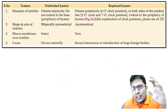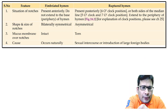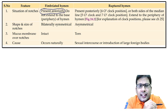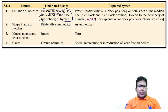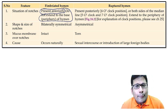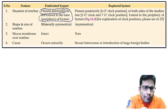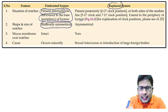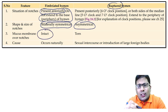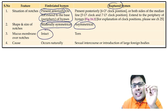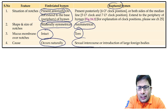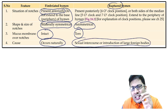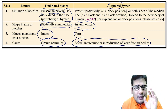Differences between fimbriated hymen and ruptured hymen: fimbriated hymen is present anteriorly and does not extend into the base of the hymen, whereas ruptured hymen extends to the base. Fimbriated hymen is bilaterally symmetrical; ruptured hymen is bilaterally asymmetrical. The mucous membrane over the notches is intact in fimbriated hymen but torn in ruptured hymen. The cause of fimbriated hymen is natural; ruptured hymen is due to sexual intercourse or introduction of large foreign bodies.